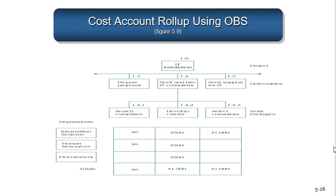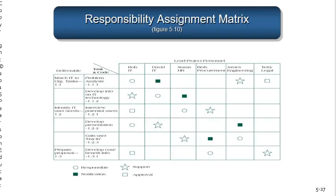Here's another example of the WBS and the cost roll-up using the OBS. For example, the information systems department has spent $500 on developing criteria, human resources spent $500, and procurement spent $500, giving you a total of $1,500 on that element of the work breakdown structure. That's how the roll-up works.